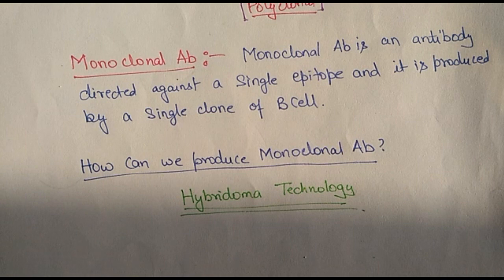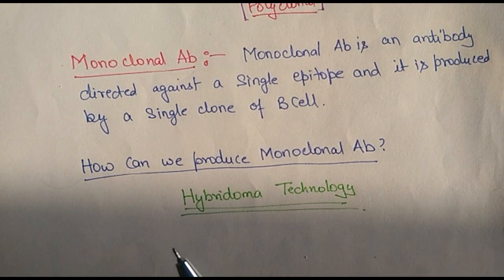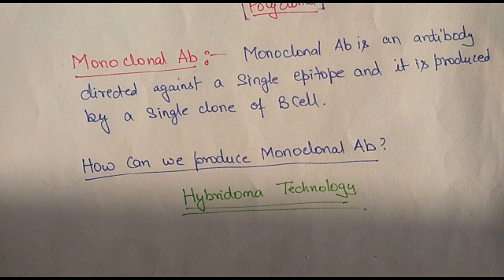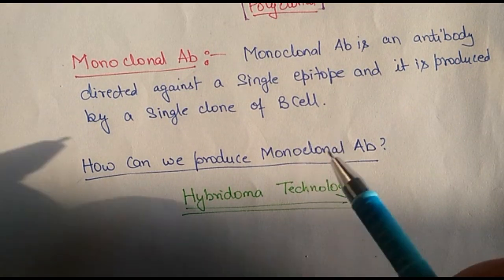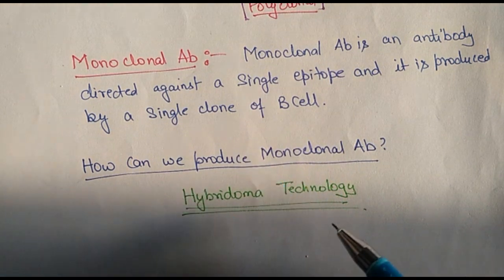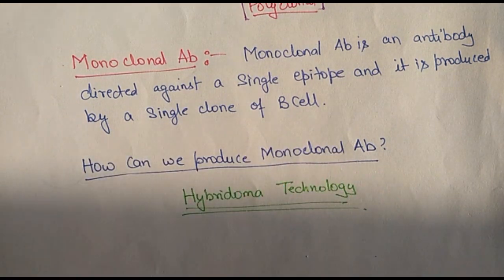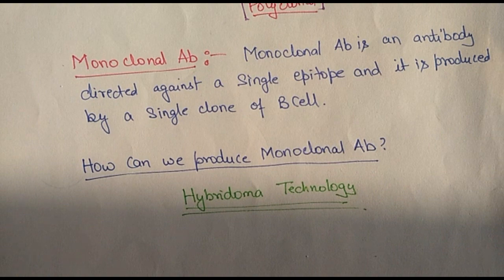Can we produce monoclonal antibodies? We cannot easily isolate them from mice — although it is possible, it is very cumbersome. The only method by which we can produce monoclonal antibodies is by hybridoma technology. It is not easy to produce or isolate monoclonal antibodies otherwise. Thank you, students.